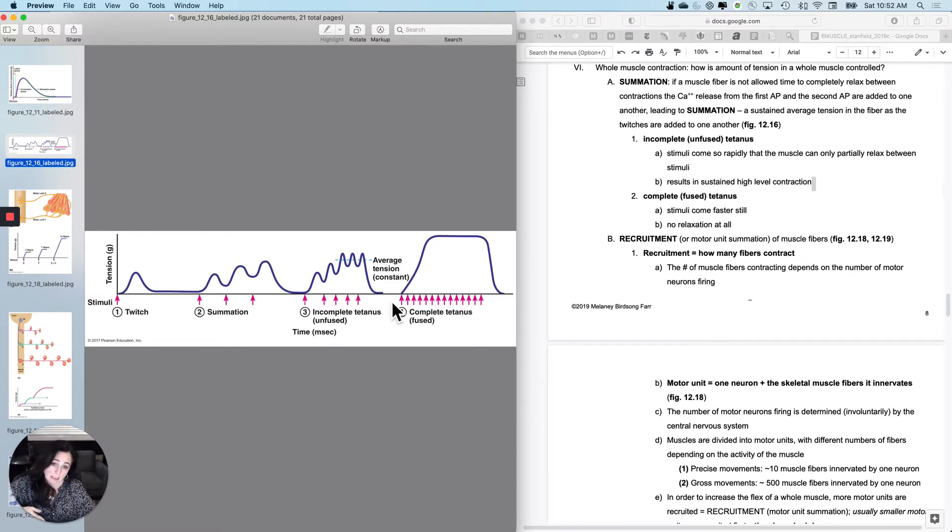If you get into this stage, which is called complete tetanus or fused tetanus, the stimuli are coming so fast that there's no relaxation at all. This does not generally happen with normal physiology. It can happen with ion imbalances or with electrocution, and it's not going to be comfortable at all. So this is called complete or fused tetanus. This is what I can do with a single fiber. I can either stimulate it more frequently and get more contraction or stimulate less frequently and get less contraction.